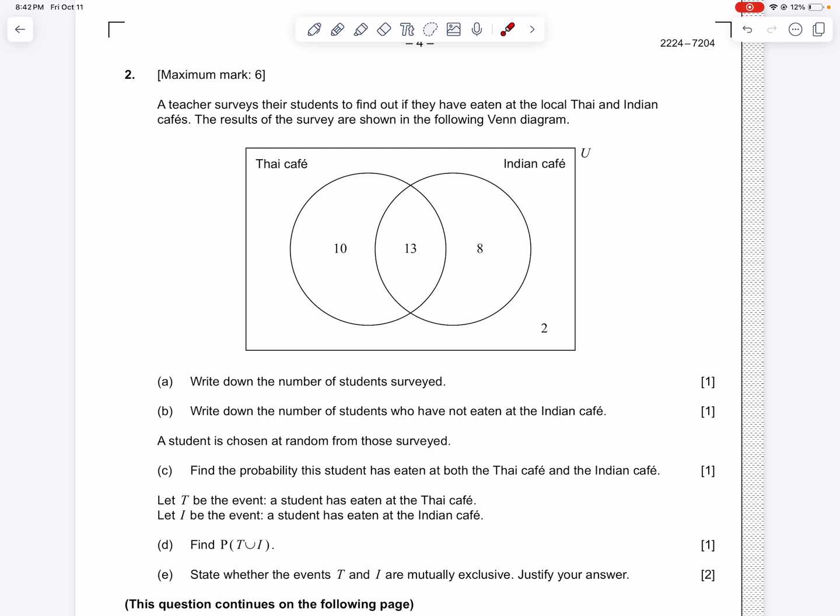So this question, we have a teacher who surveys her students to find out if they've eaten at the local Thai place or the local Indian place. In a Venn diagram, here's what I want you to think of this as. Think of this as an aerial view of the Thai Café. So here we are looking at that Thai Café. And in that Thai Café, 10 people have been only to that Thai Café.